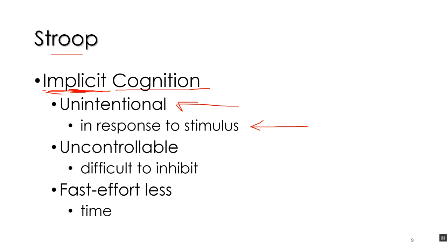Learning to read phonetically — sounding out letters — is certainly explicit: it's intentional, controlled, and takes a lot of effort. But once you become familiar with a set of letters, you don't have to sound them out. You look at 'implicit' and immediately in your mind you know that's 'implicit.' You're not doing that sounding-out process for every word you read; it automatically comes to you. That's implicit cognition.